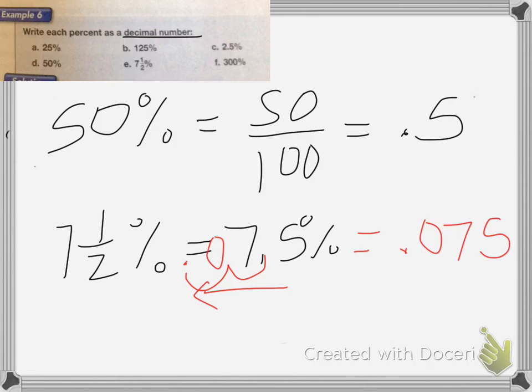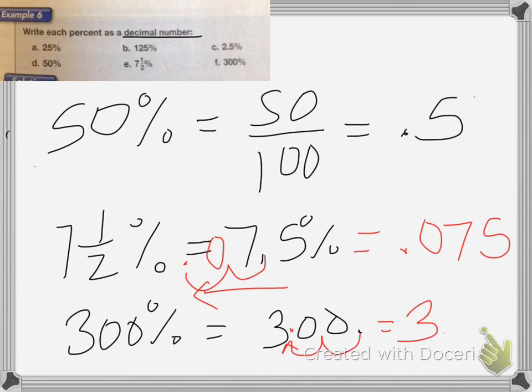We just shift the decimal place two places to the left. So for the last one, we have 300%. So we're going to take that 300, put the decimal at the end, and move it two places to the left. 1, 2, so it's going to be 3.00. But as you remember, we don't need those extra zeros at the end, so I can go ahead and erase them. And that's it for this lesson.